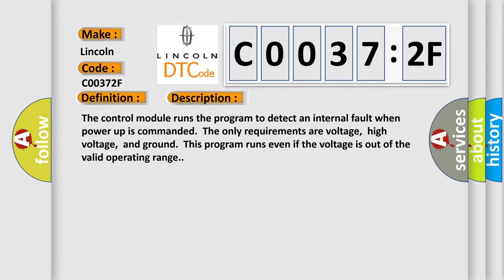The control module runs the program to detect an internal fault when power-up is commanded. The only requirements are voltage, high voltage, and ground. This program runs even if the voltage is out of the valid operating range.